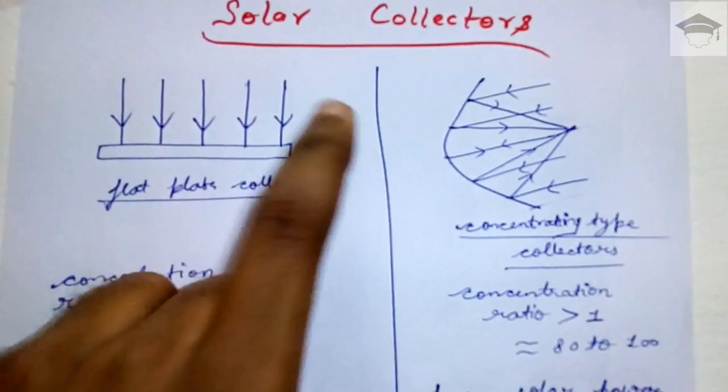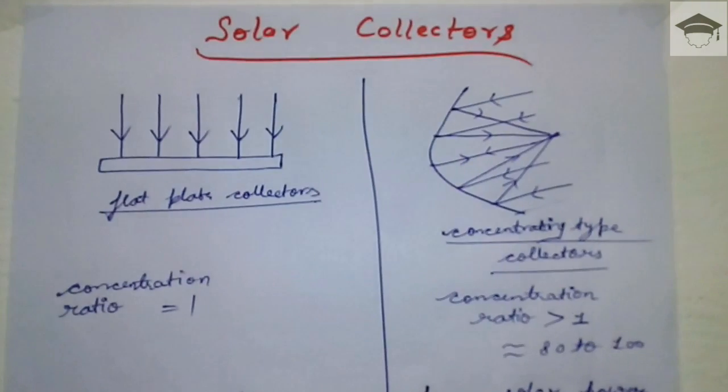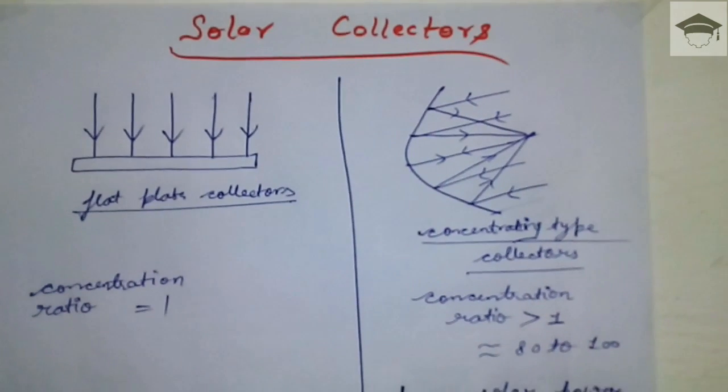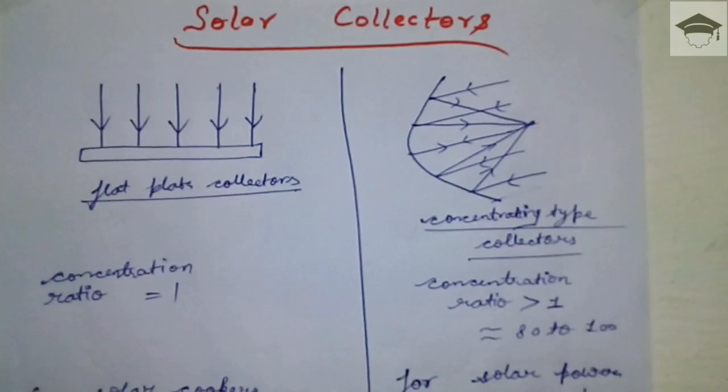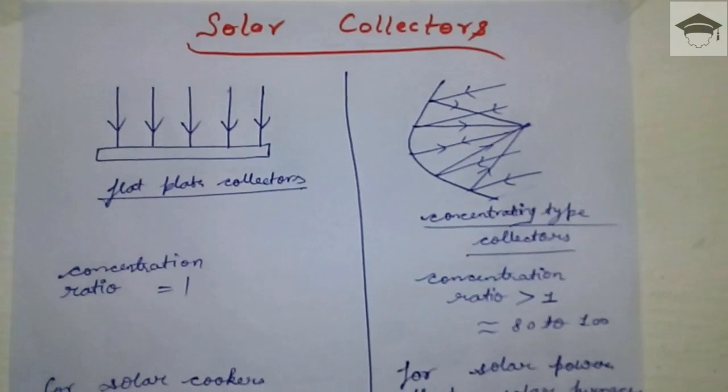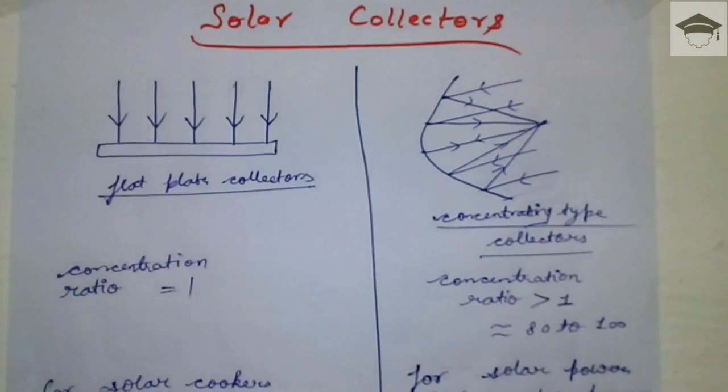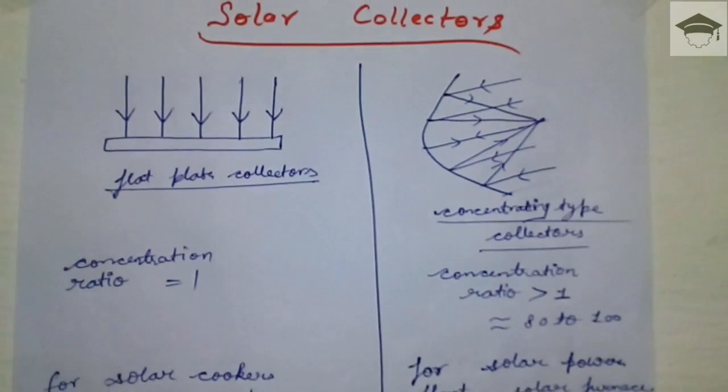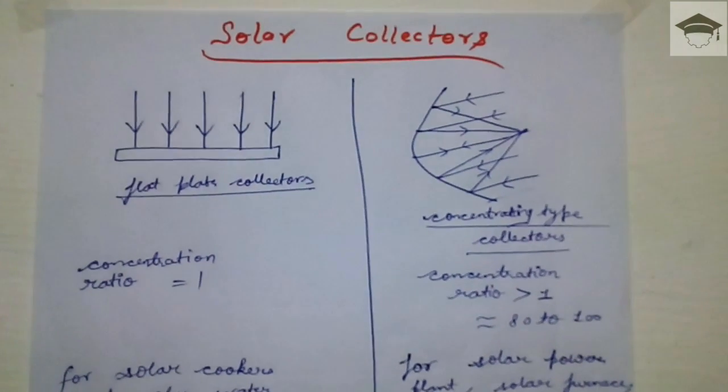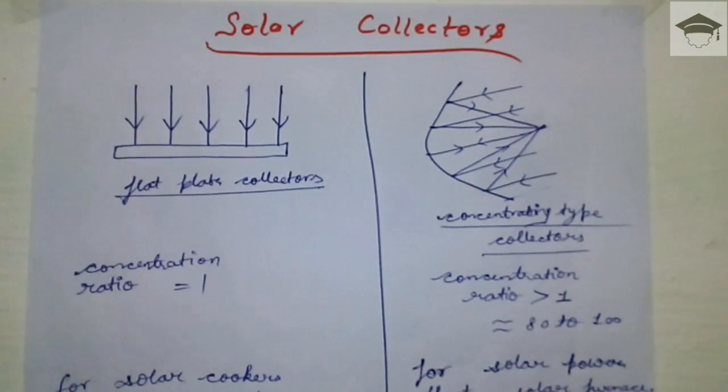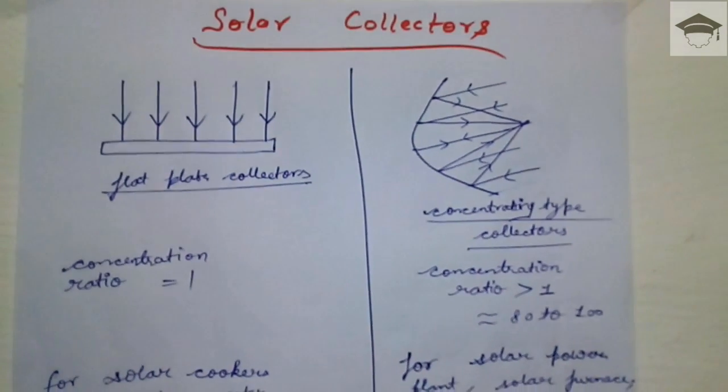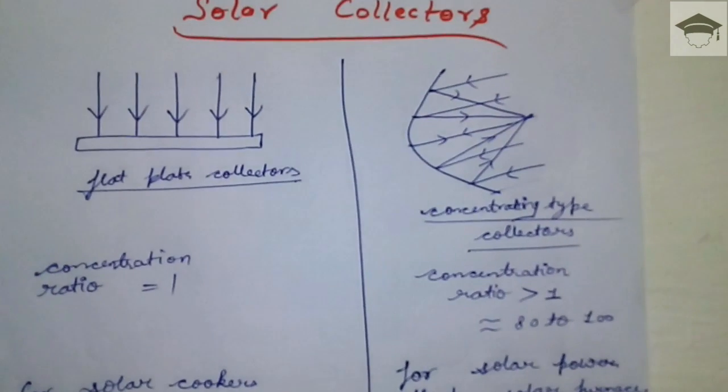We produce electricity using solar energy in photovoltaic cells, which are also collectors. In that case we employ flat plate collectors. In solar power plants, to heat the water in the boiler to produce steam, we use concentrating type collectors.